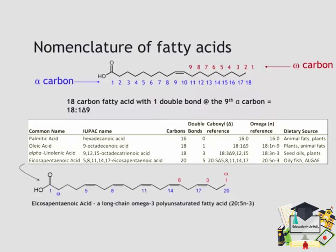Going down to some of these other examples, the final example is eicosapentaenoic acid, also known as EPA, a 20:5 omega-3 fatty acid. As you can see from this molecule, this 20-carbon, 5-double-bond fatty acid contains 5 unsaturations at the 5, 8, 11, 14, and 17 positions relative to the omega carbon. This unsaturation pattern is the reason we call these omega-3: the first introduction of the double bond relative to the omega end occurs 3 carbons in from the end of the molecule.